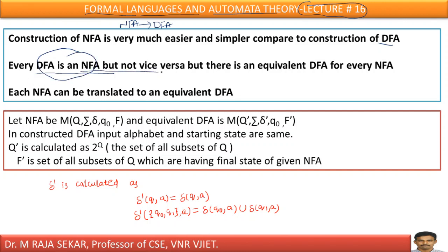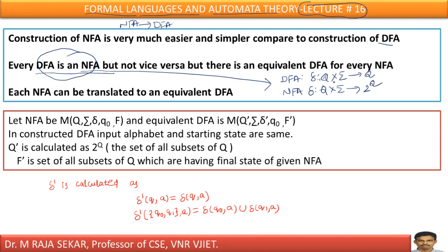How will you justify — what is the difference between DFA and NFA? In the case of DFA, the transition function delta is Q cross sigma to Q. What about NFA? The NFA transition function is Q cross sigma union to 2^Q. If you observe the definitions of DFA and NFA, they differ only in terms of the transition function. Therefore, Q is a set and 2^Q is its power set — set of all subsets. Certainly Q is present in 2^Q, so Q always presents in its power set. Therefore, every DFA is an NFA.